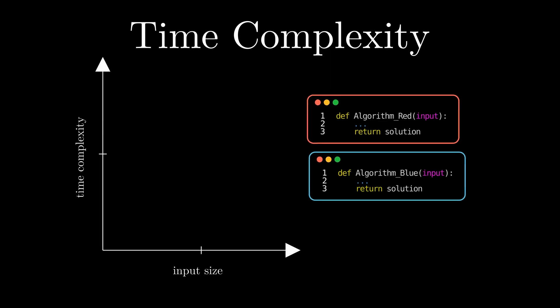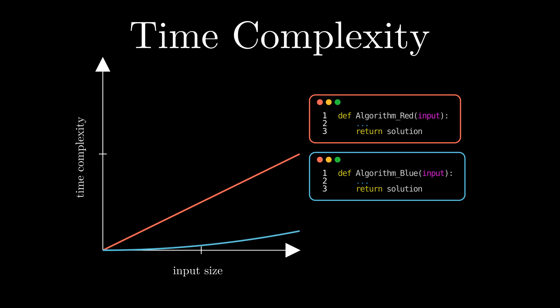Let's go back to our original algorithms. We want to measure the time complexity as a function of the input size. For a given input size, we can plot the time complexity of both algorithms. We see that algorithm blue is performing better than red because its time complexity is lower.